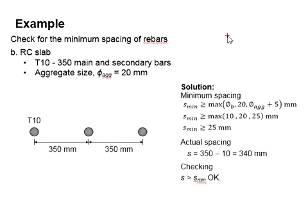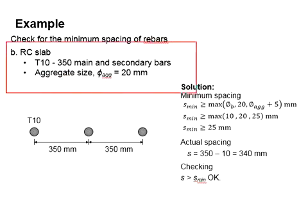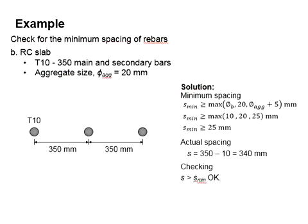This is the solution for RC slab. For you to calculate the minimum spacing, this equation is applied. It is covered by the size of the reinforcement bar 20 mm and also aggregate size 20 plus 5. The bigger value is chosen. As for the actual spacing, R10 are spaced out by 350 center to center.